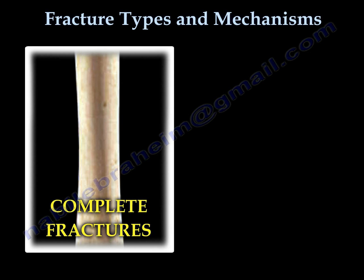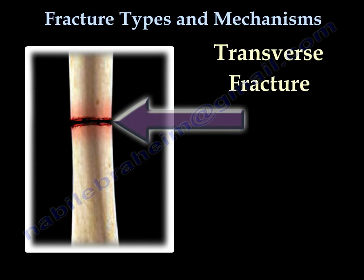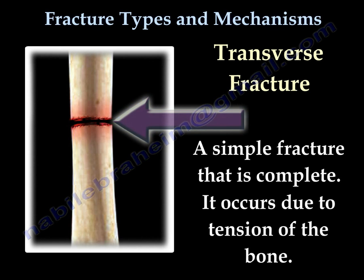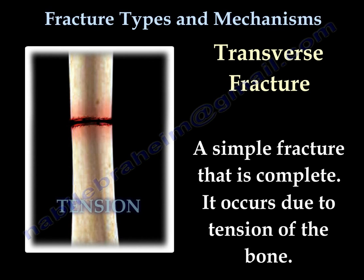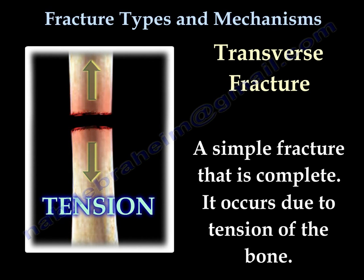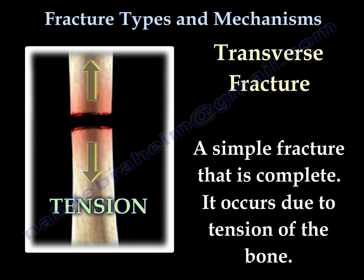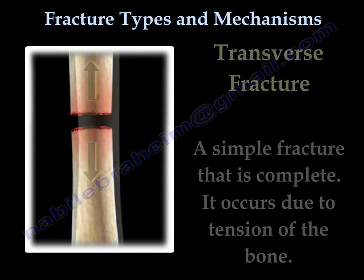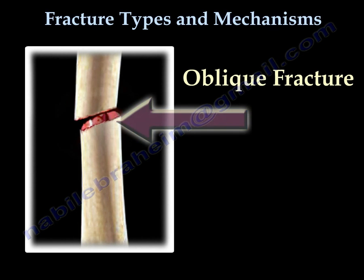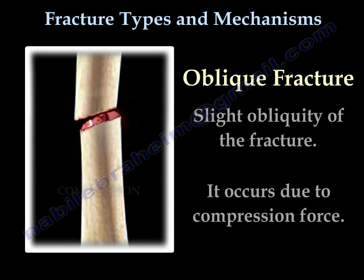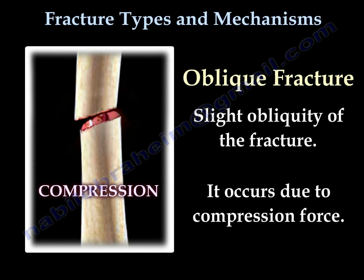Complete fracture types. A transverse fracture is a simple fracture that is complete and it occurs due to tension of the bone. The oblique fracture has slight obliquity of the fracture and it occurs due to compression force.